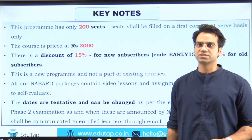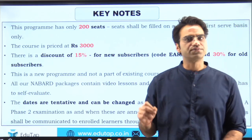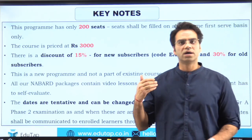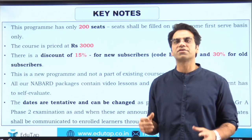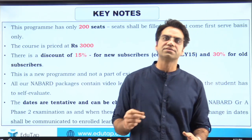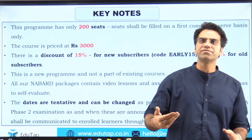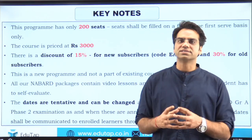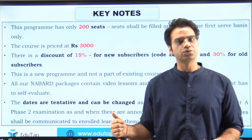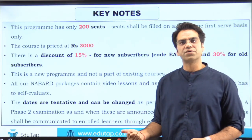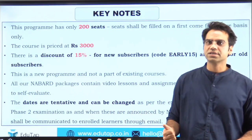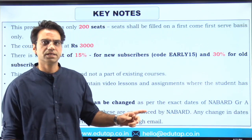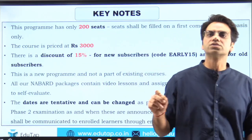This course is not for all students — it is on a strictly first-come, first-served basis. We are only offering 200 seats. We are limiting seats because it takes a lot of time and effort to evaluate each and every paper and then call back and provide feedback. The cost for this course is ₹3,000. We are also offering a 15% discount for new students using the code 'Ugly15', and a 30% discount for our existing students.